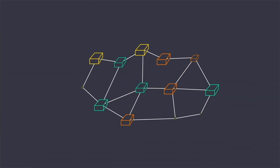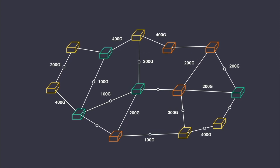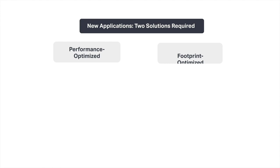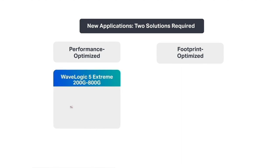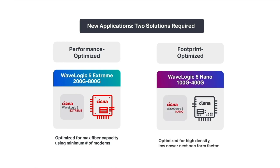As they evolve and upgrade their networks, providers are now strategically expanding the role of coherent technology into new applications and require two types of solutions moving forward: one that's optimized to deliver the best performance without constraints, and one that is optimized to fit into a specific form factor and power envelope.